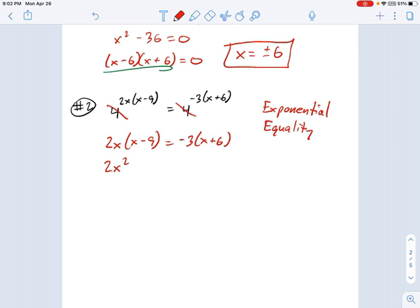So now, what's left? I have 2x(x - 9) = -3(x + 6), which means 2x² - 18x on the left and -3x - 18 on the right. And again, this looks like a factoring problem, so move everything to the left. We get 2x² - 18x + 3x + 18 = 0. Combine some like terms, and we get 2x² - 15x + 18 = 0.